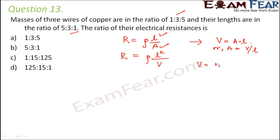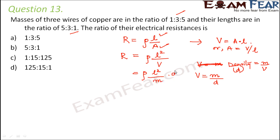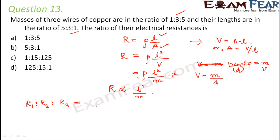Now, density D equals mass by volume, so volume equals mass per unit density. Therefore resistance can be written as rho L squared divided by M into D. Since density and resistivity are constants, R is proportional to L squared by M. To find the ratio R1 : R2 : R3, we compute L1 squared by M1 : L2 squared by M2 : L3 squared by M3.